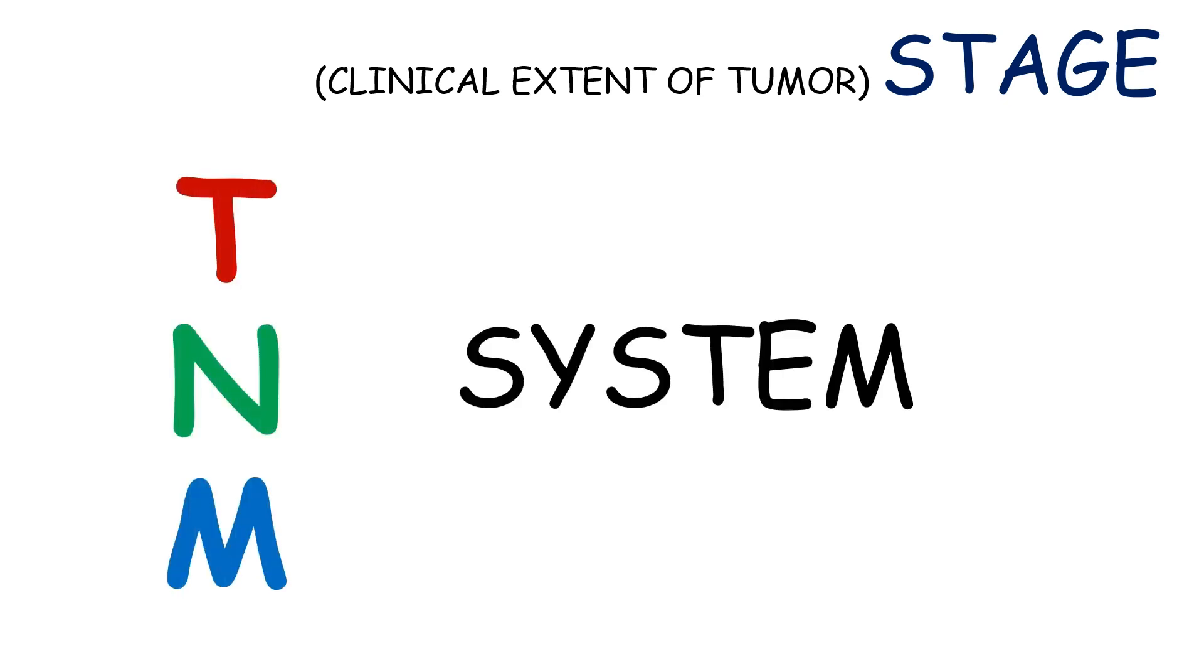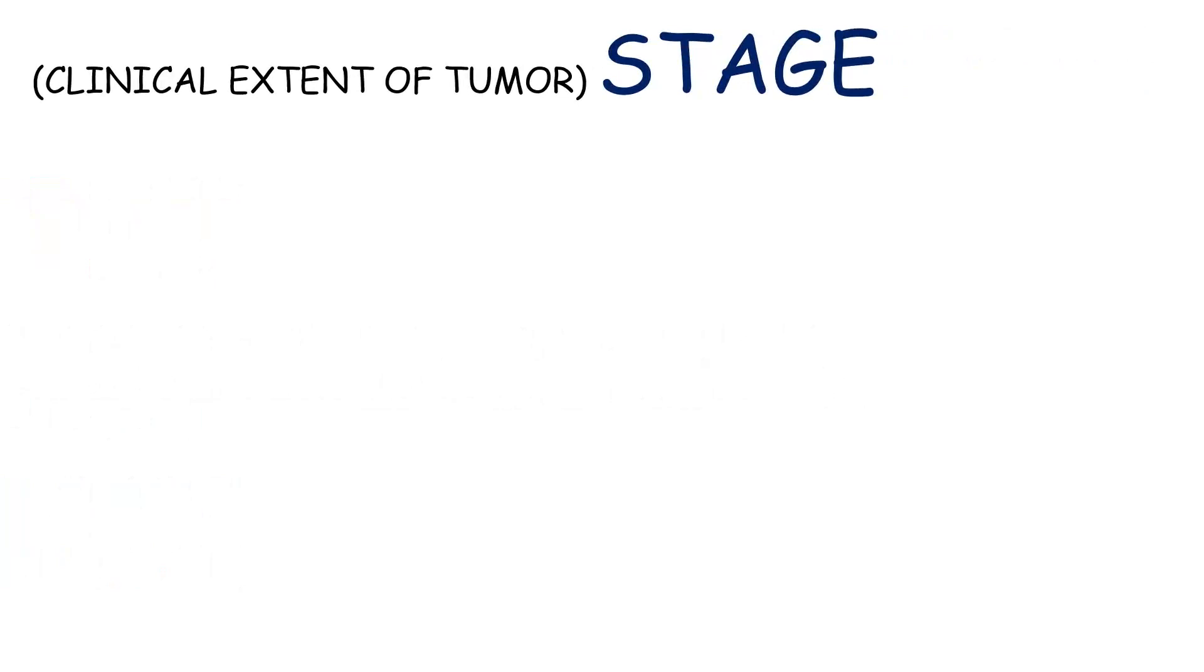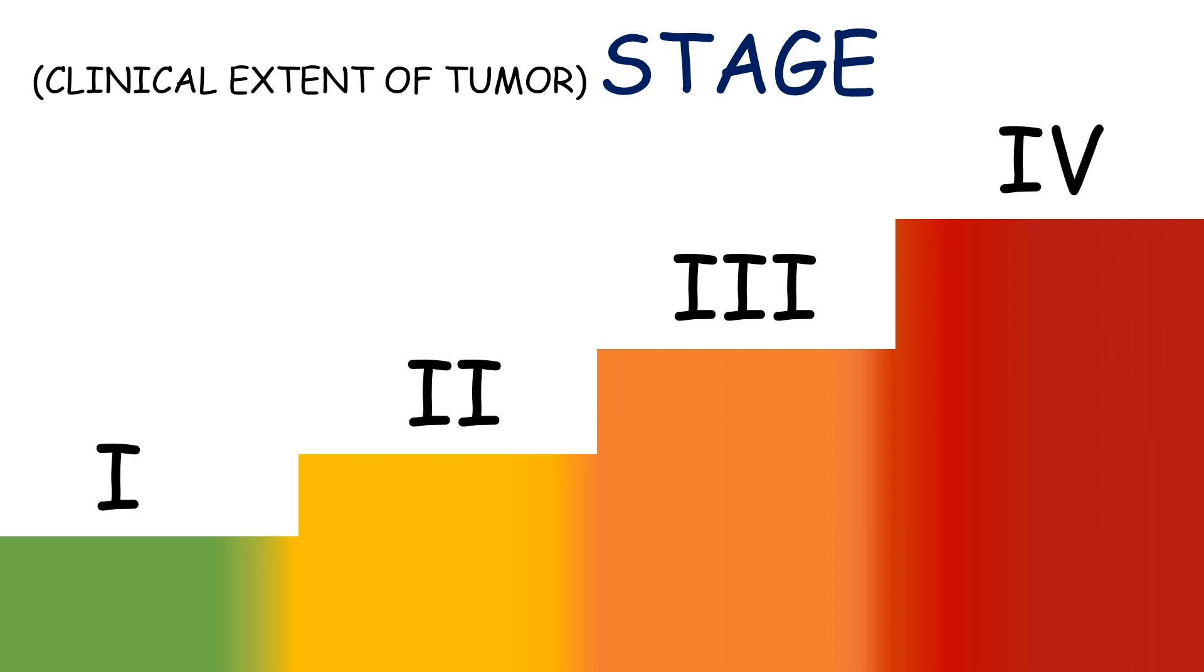This can be studied through the TNM system. The stages of cancer are stage 1, 2, 3, and 4. Each stage has a criteria that needs to be met before it can be termed that stage.